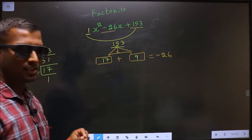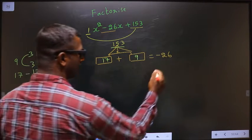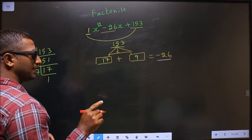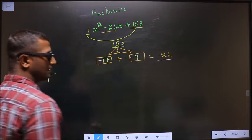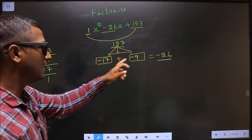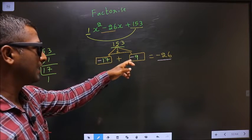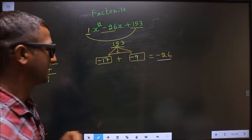Now you should adjust the signs. Here I should get minus 26. That could only happen if I put negative here and also negative here. Minus 17 minus 9 is minus 26. Minus 17 into minus 9 is plus 153. Okay, next.